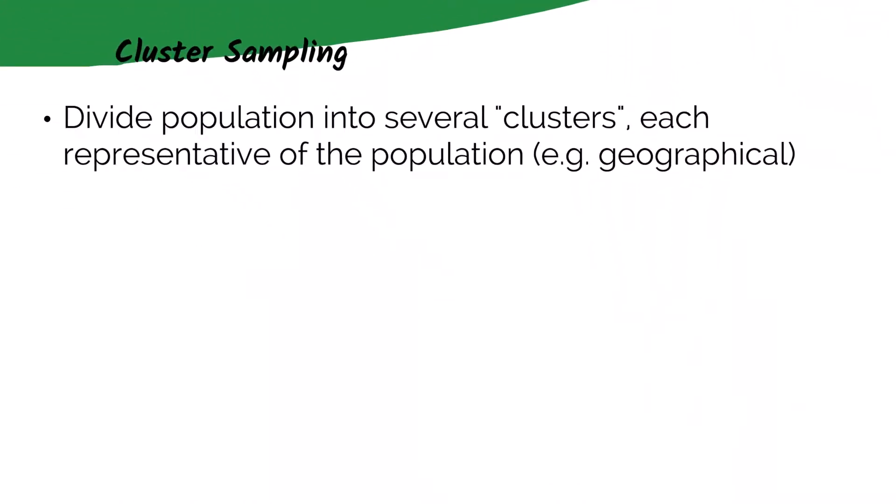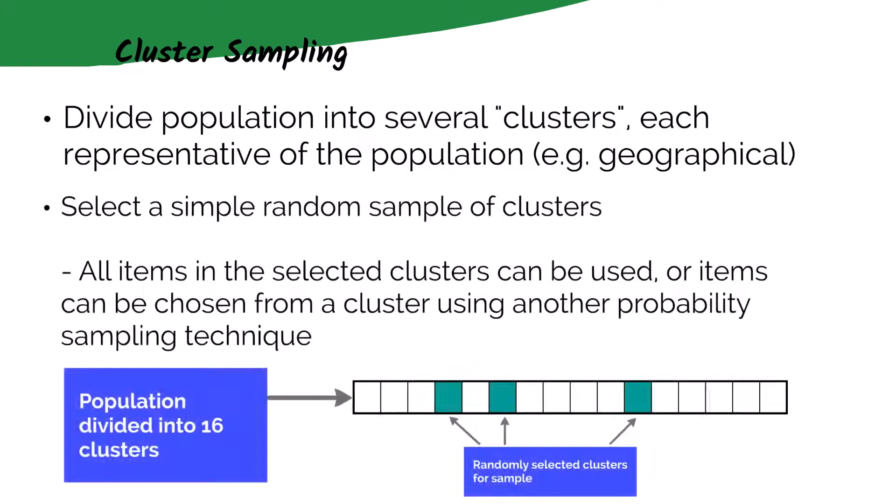Cluster sampling is where we divide the population into several clusters, each representative of the population. This is typically geographical, so when you hear anything related to geography or area, this is your clue that this is a good situation to use cluster sampling. Once the population is clustered, we then select some of the clusters using our simple random sampling. All items in the selected clusters could be used, or we can use only certain items from the cluster using another probability sampling technique.